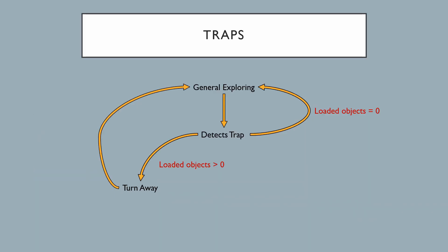When the robot detects a trap and has no objects on it, it will move over the trap. When it has at least one object on it, it will avoid the trap by turning away.